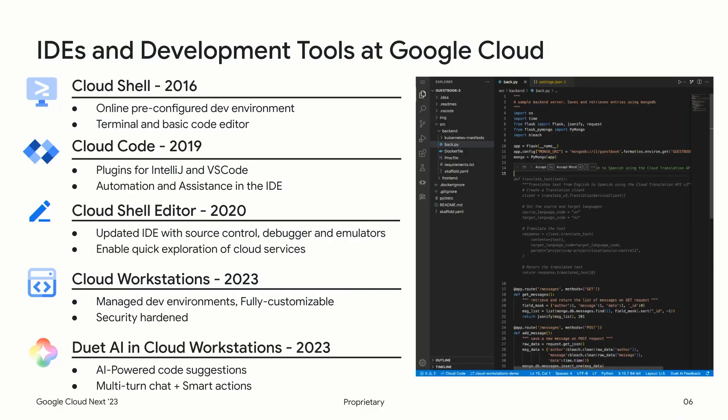So the cloud workstations overview — let's first start by recapping all the tools Google Cloud has currently available for developers. The first of them was Cloud Shell, which essentially provides you with a pre-configured development environment available from a terminal. It's focused on simplifying onboarding and evaluation — if you want to run a gcloud command or quickly set up a GKE cluster, you just go to a browser, and within a few seconds you're up and running.